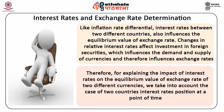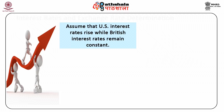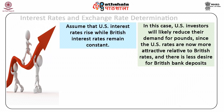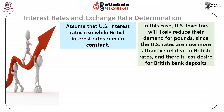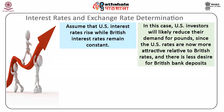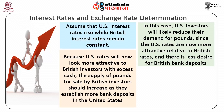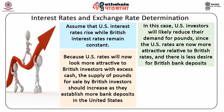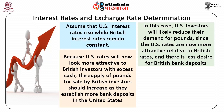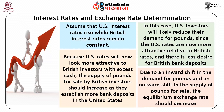Here, we take a case of rising US interest rates and its impact on the equilibrium value of the British pound. Assume that US interest rates rise while British interest rates remain constant. In this case, US investors will likely reduce their demand for pounds since the US rates are now more attractive relative to British rates and there is less desire for British bank deposits. Because US rates will now look more attractive to British investors with excess cash, the supply of pounds for sale by British investors should increase as they establish more bank deposits in the United States. Due to an inward shift in the demand for pounds and an outward shift in the supply of pounds for sale, the equilibrium exchange rate should decrease.